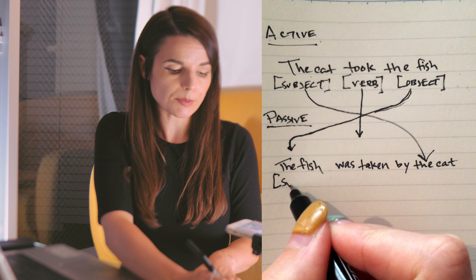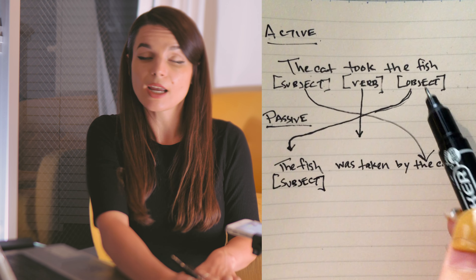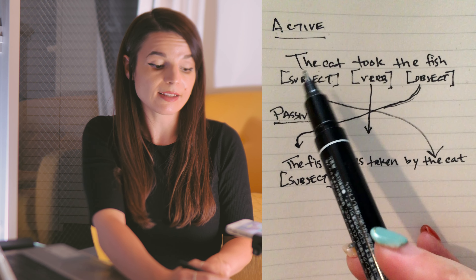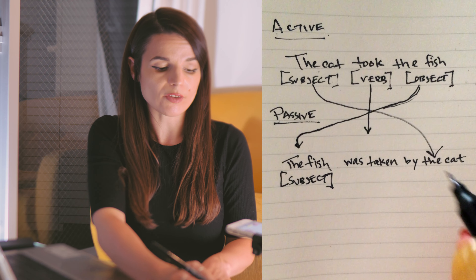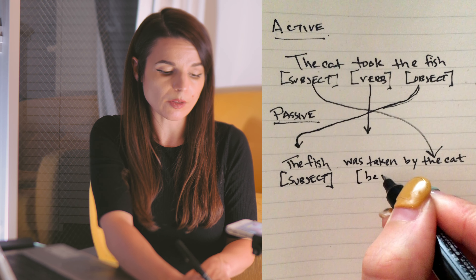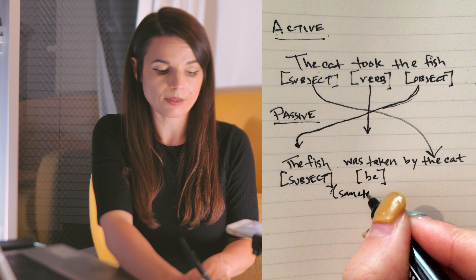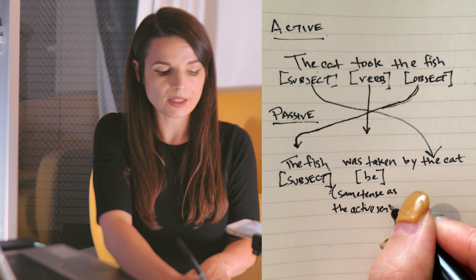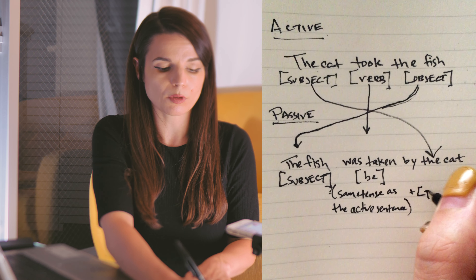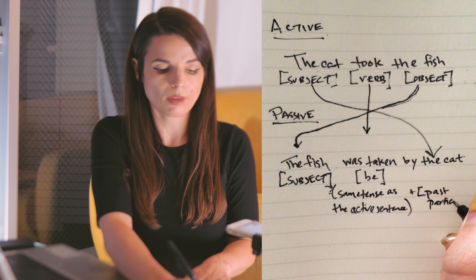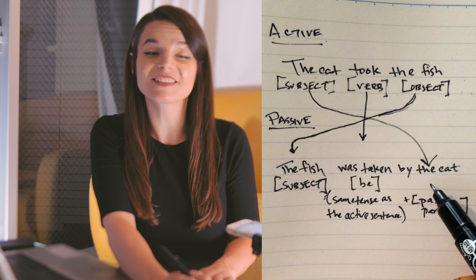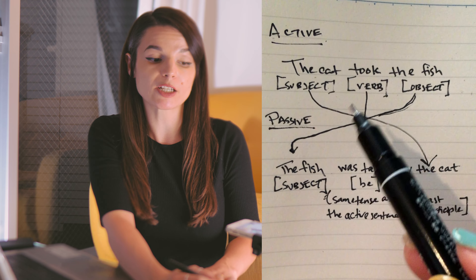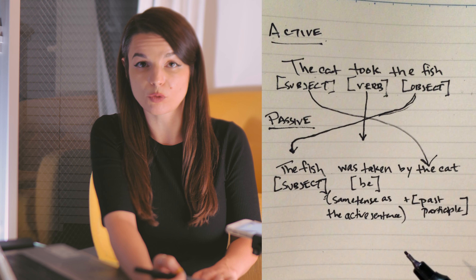So we still have our same subject and same object, but they've changed positions in the sentence. By doing so, the emphasis also changes. The sentences communicate the same idea, but they've changed in terms of emphasis — instead of emphasizing the cat, now we are emphasizing the fish. So in a passive sentence we have: the subject, a be-verb in the same tense as the active sentence, the past participle, and optionally 'by someone' if we know the actor. We're going to use this same flowchart to create passive voice sentences throughout this lesson.